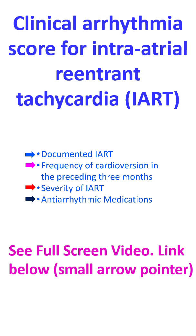For anti-arrhythmic therapy: 0 for none or digoxin only, 1 point for class 2 or 4 anti-arrhythmic therapy, 2 points for class 1 or 3 anti-arrhythmic therapy, and 3 points if there was amiodarone toxicity. The total score was calculated as the sum of the highest score in each of the four categories.